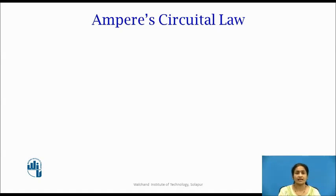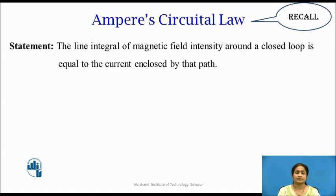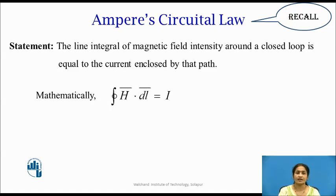Let us recall Ampere's Law. In the previous videos, we discussed Ampere's Circuital Law. The Ampere's Circuital Law states that the line integral of the magnetic field intensity across the closed loop path is equal to the current enclosed by that path, which is mathematically given as the closed integral of H·dL = I.